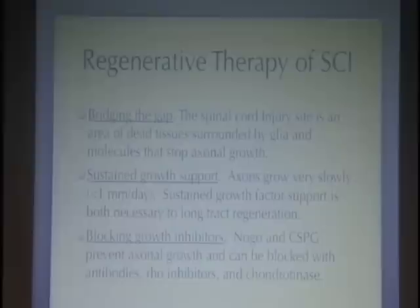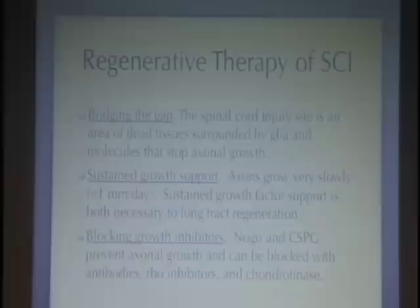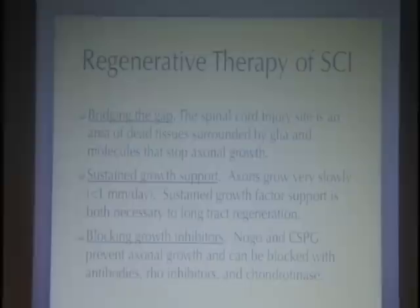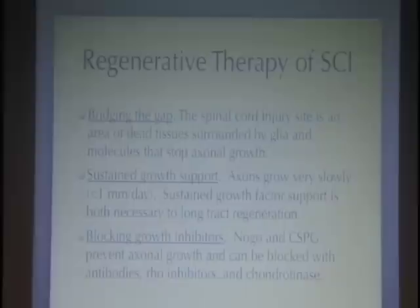Bearing this picture of spinal cord injury in mind, I want to talk about how you would regenerate such a spinal cord — because I believe this is the spinal cord present in probably 60–80% of people with spinal cord injury. The injury site is an area of dead tissue surrounded by glia and molecules that stop axonal growth, with a loose matrix where axons enter but have no cues as to where to grow. One way to address this is to bridge the gap — putting a bridge of living cells across the injury site that would support axonal growth.